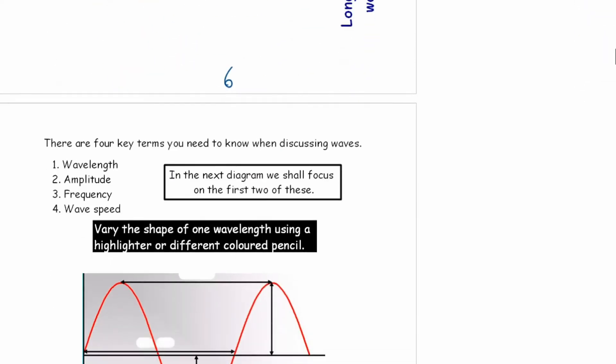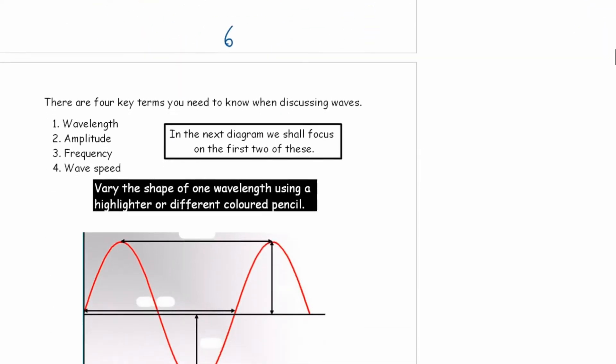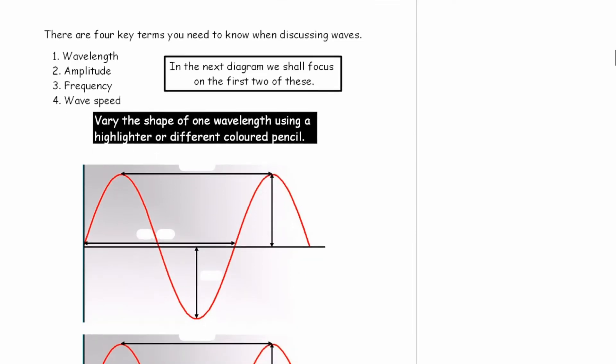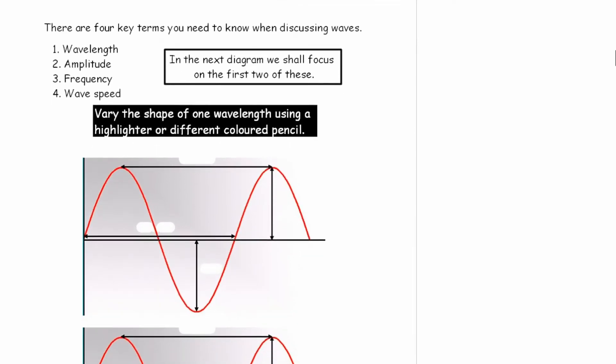So if you move on now please to page seven, we're going to learn more about these four key terms: wavelength, amplitude, frequency, and wave speed. We've covered the first three already — we haven't covered the fourth, wave speed. It says in the next diagram we should focus on the first two: that's wavelength and amplitude.